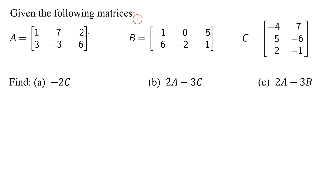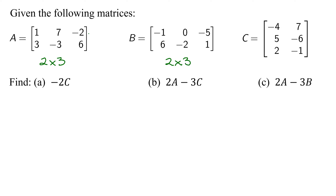In this problem, we're given the following matrices A, B, and C, and we need to find three quantities. Before we do that, let's figure out the order or dimensions of each matrix. Matrix A has two rows and three columns, so it is a two-by-three matrix. Remember, we always put the rows first. Matrix B is also a two-by-three matrix. Matrix C has three rows and two columns, so its dimensions are three-by-two.